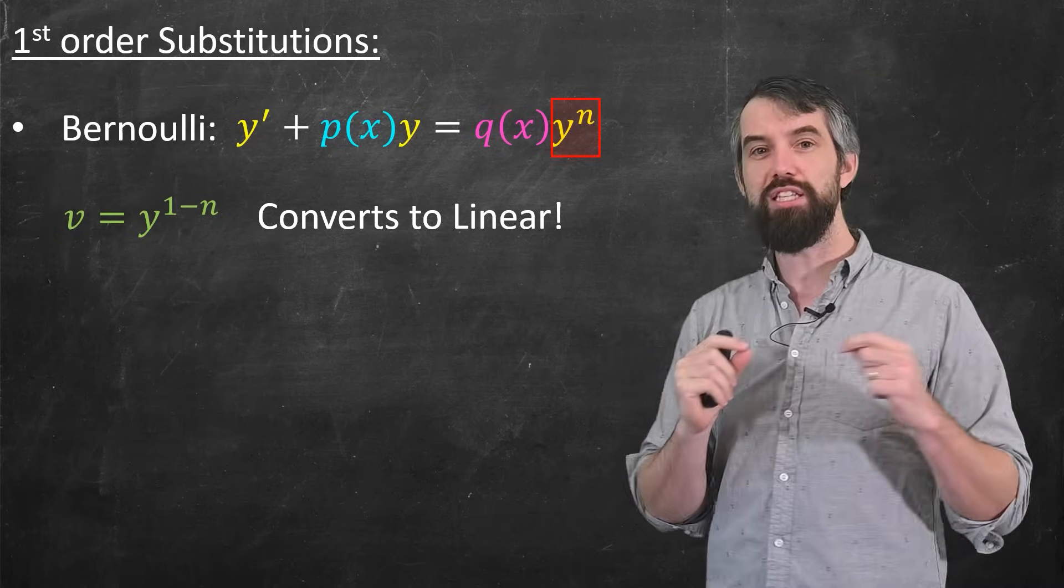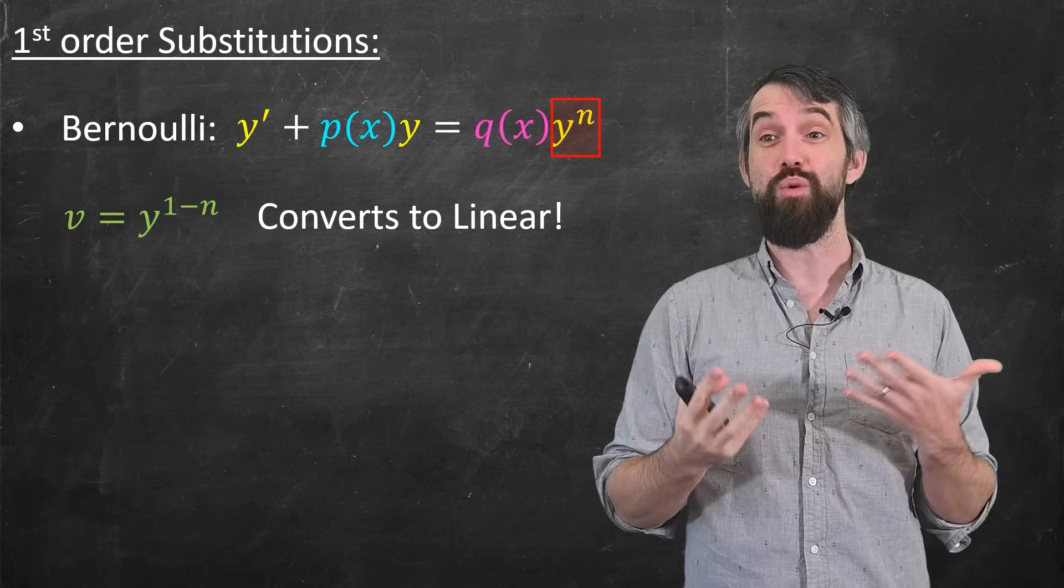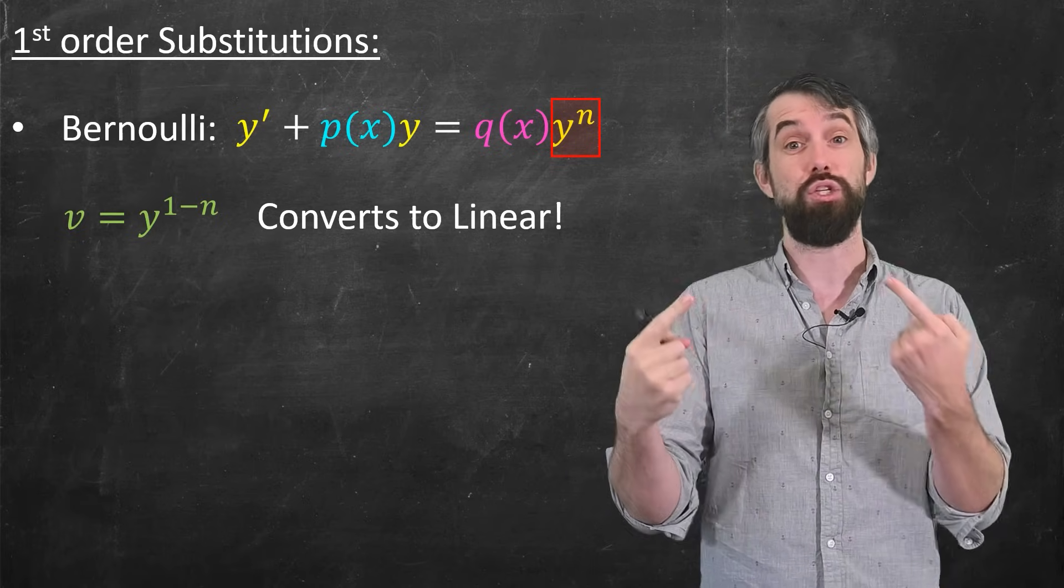It's a very special case, but it turns out if you just do a change of variables, v is y to the 1 minus n, it will convert this to linear.